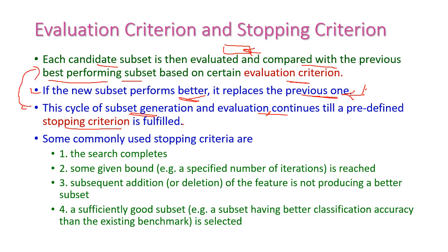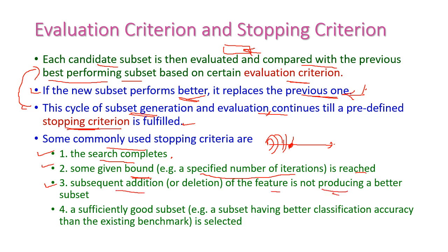Some of the commonly used stopping criteria are: first, the search completes — meaning the search will complete till the end of the dataset. Second, some given bound is reached, meaning some specified number of iterations will be reached — we can fix the number of iterations in the program, and when it reaches the required iterations we stop. Third, subsequent addition of a feature does not produce a better subset — if the selected subset is not improving, then we stop. Fourth, a sufficiently good subset is selected — then also we can stop the selection process.